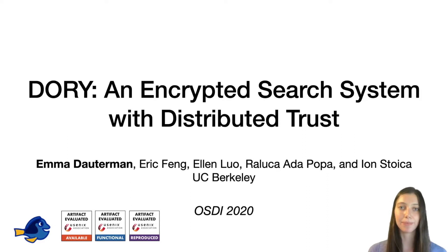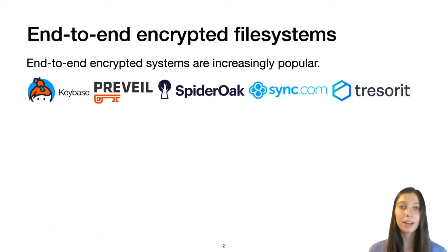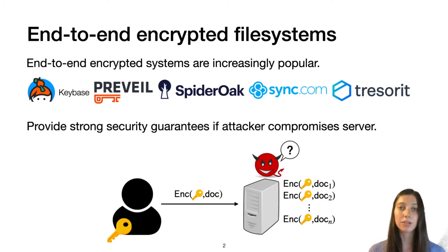I'm going to be talking about Dory, an encrypted search system with distributed trust. Over the last few years, end-to-end encrypted systems have grown increasingly popular. One example of these is end-to-end encrypted file systems like Keybase, Prevail, SpiderOak, Sync, and Trezorite. These systems provide strong security guarantees even if the attacker compromises the server. The client has a cryptographic key and the server just has ciphertexts that it can't decrypt.